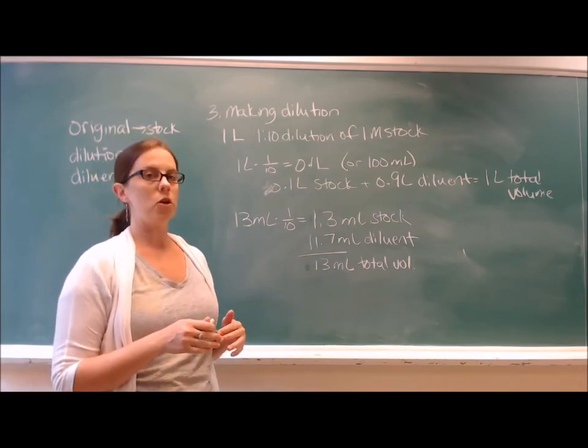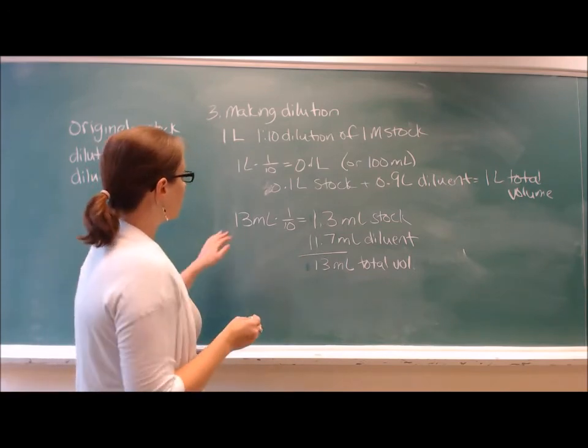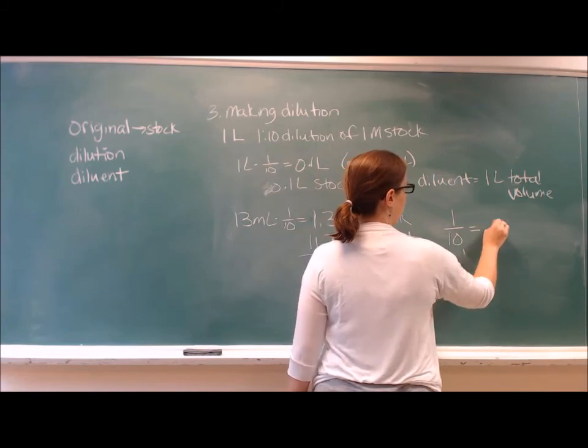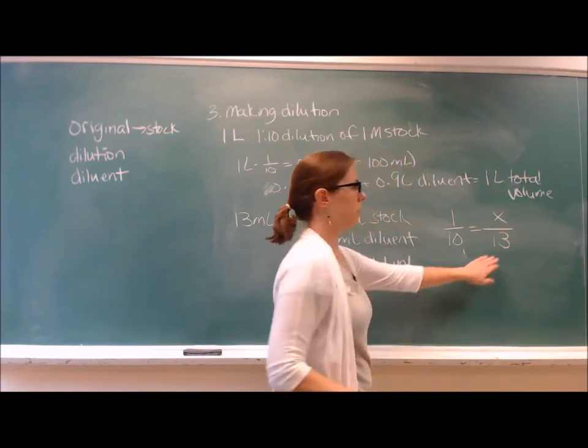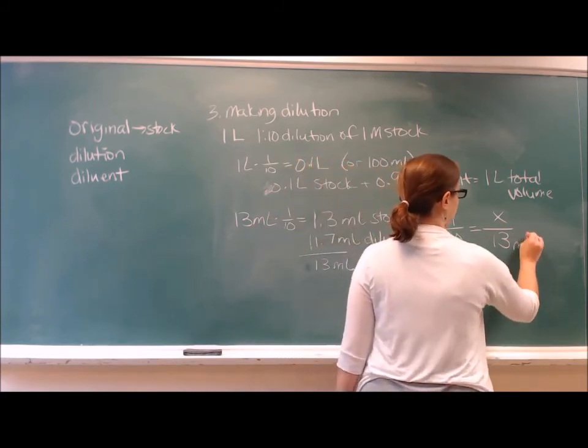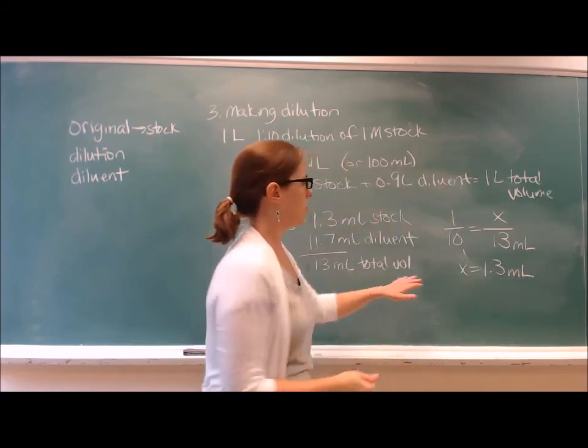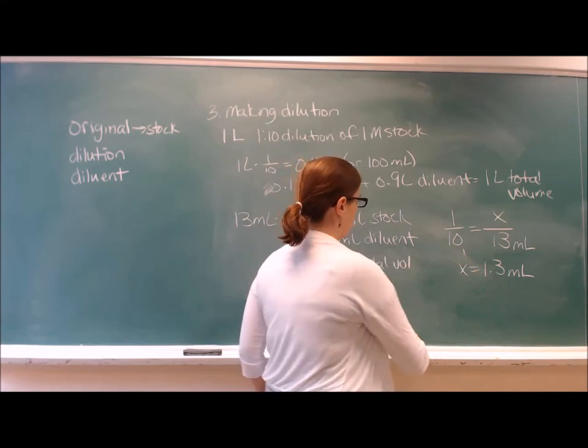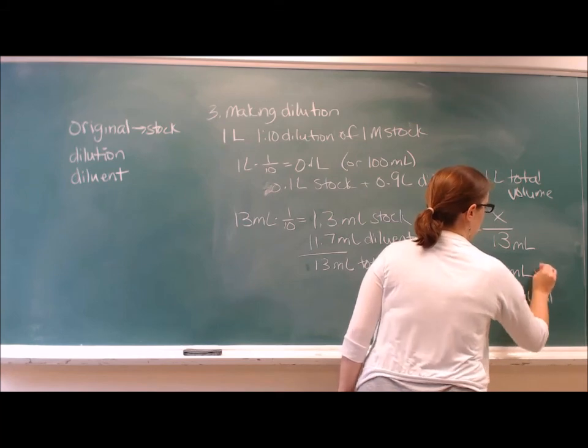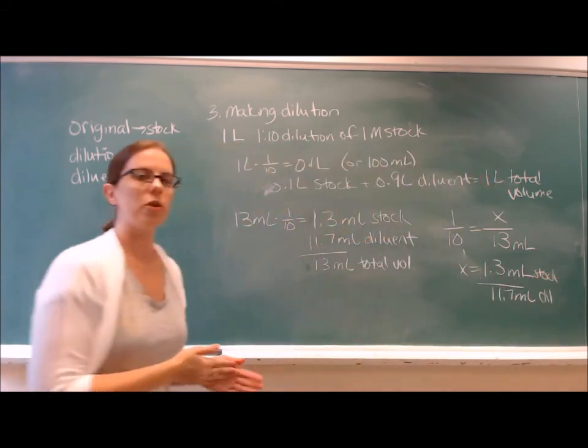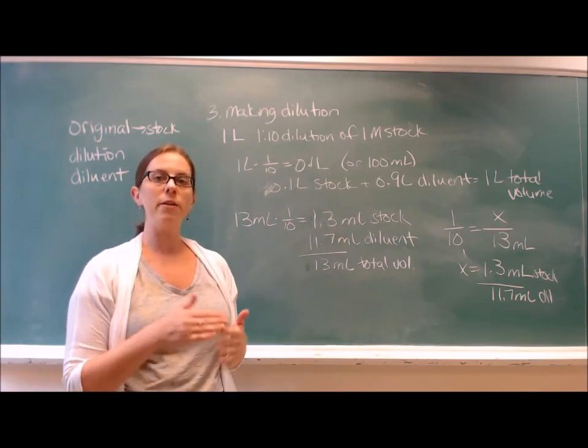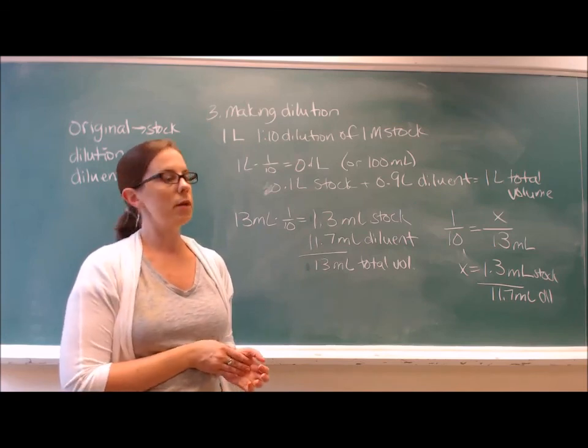We can also think about this in terms of equivalent fractions. Another way to calculate this would be to say we want 1 to 10 dilution, and we want the final volume to be 13 mils, and then we can solve for x, and x would be 1.3. And then you would just subtract this from the total volume to get 11.7 mils of your diluent. There are a couple different ways you can calculate this, but it's really important that you double-check your work and make sure that your final dilution you make in your experiment is correct.